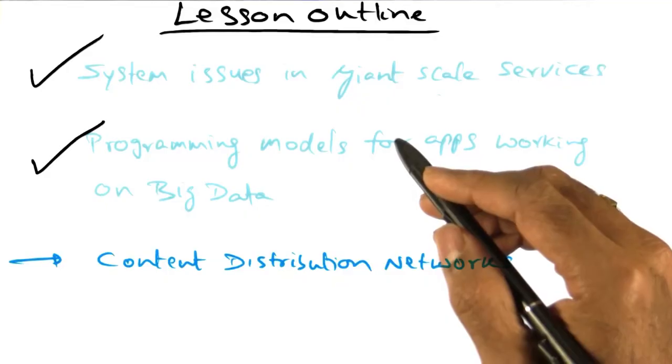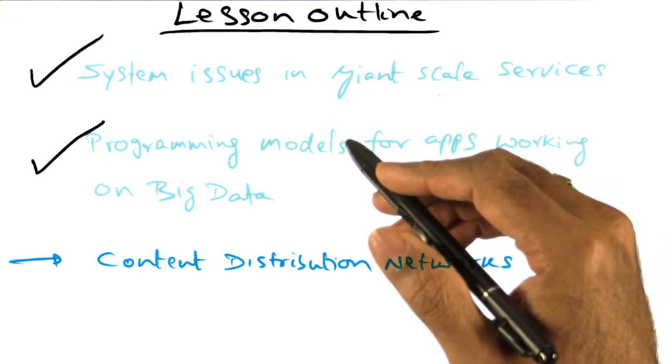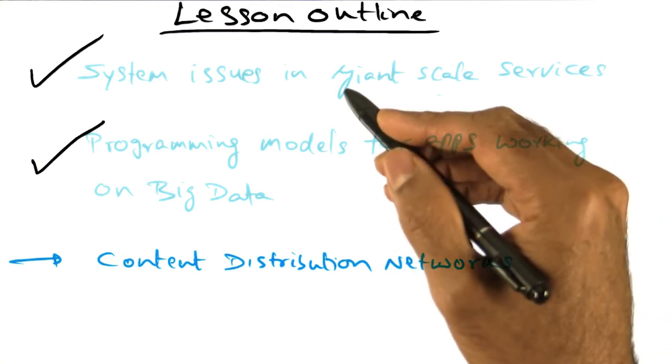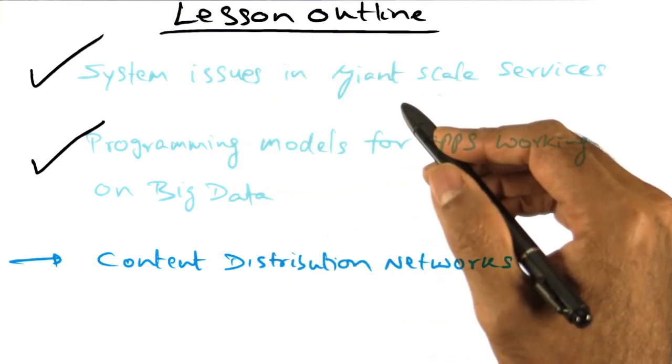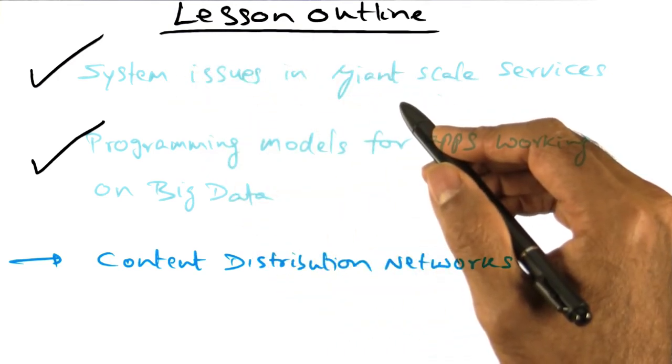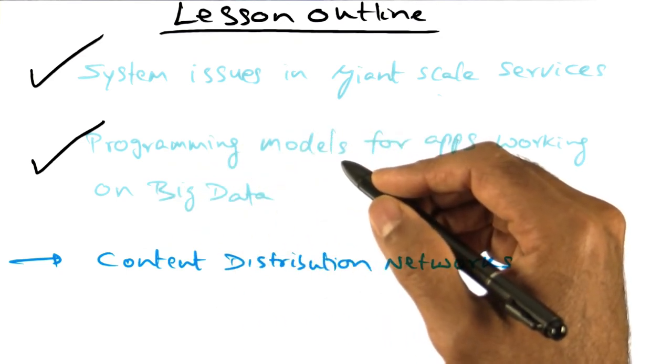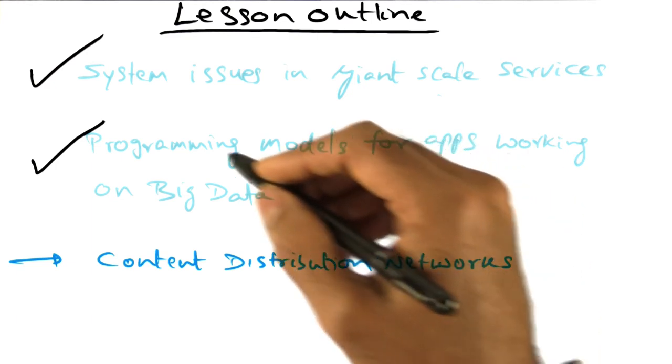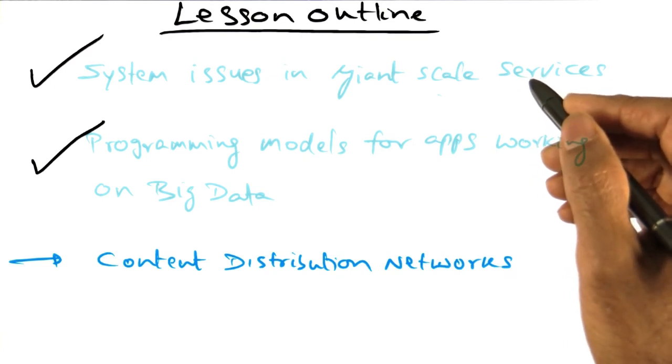How is the content on the Internet stored and distributed? In the first two lessons of this module, we looked at the server end of the giant scale services. How are computational resources organized in the data center? How is the data organized internally in the computational nodes of the cluster? And what is the programming model for dealing with the big data associated with giant scale services and for exploiting all the computational resources that are available in the server forms at data centers?